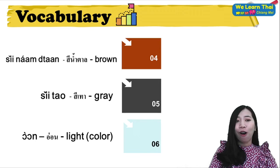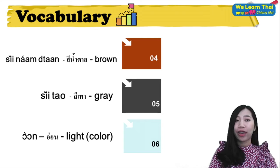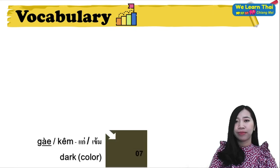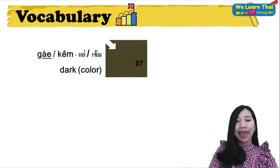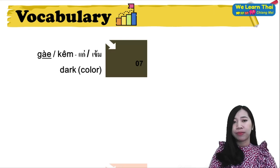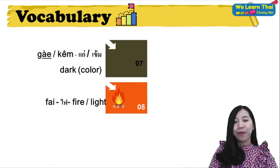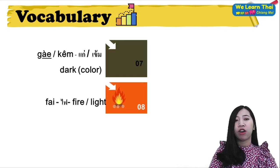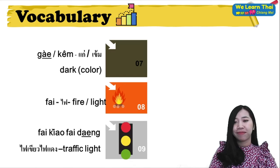And then you can change like di chan chop see on, light for color, or you can say khem, dark for color. Fai fah or fai on means light. Kheow fai on means light green.